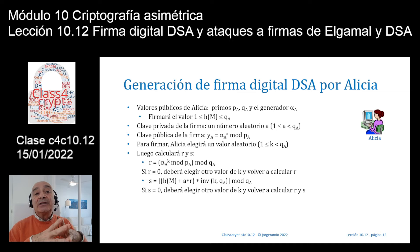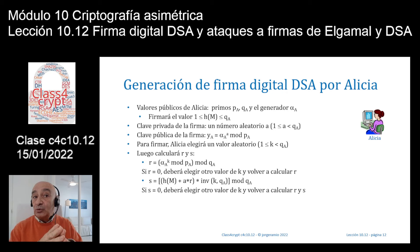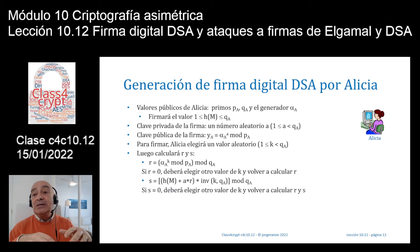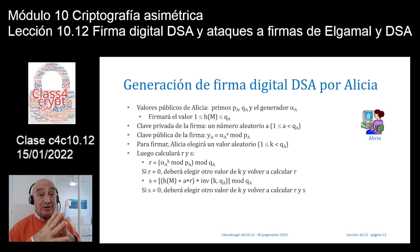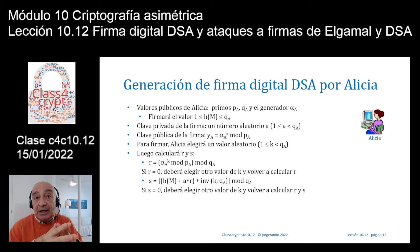¿Cómo se calcula la primera parte de la firma, R? R = (alfa_A^K mod P_A) mod Q_A. Es decir, primero se calcula la potencia reduciéndola a módulo P (1024 bits) y luego ese valor se reduce a módulo Q_A (160 bits). Si por casualidad R vale 0, hay que elegir otro valor de K y volver a calcular R, ya que R se utiliza en la comprobación de la firma.